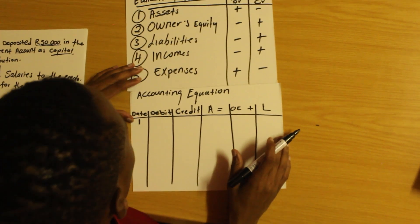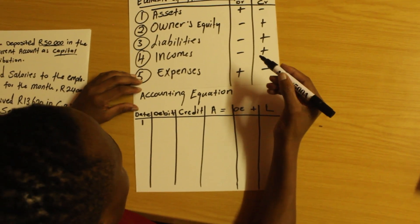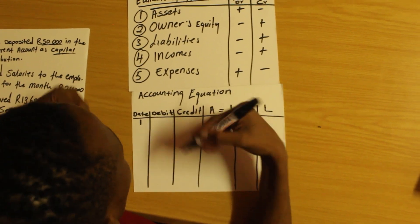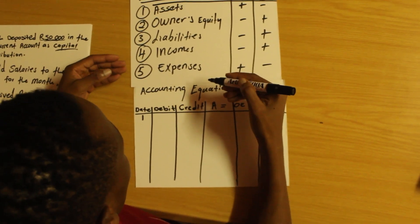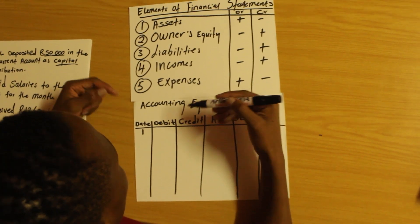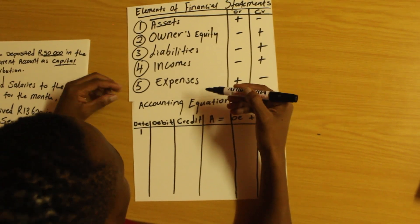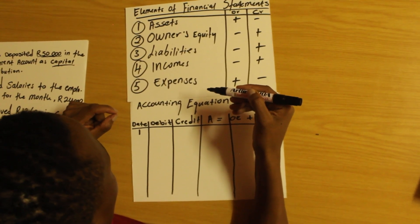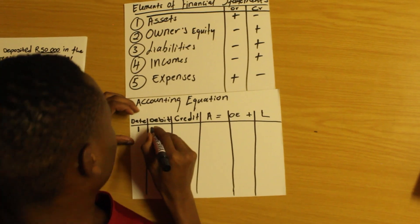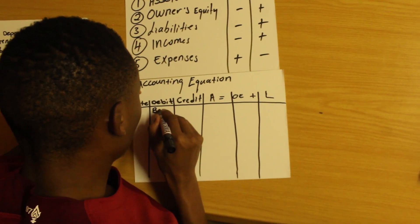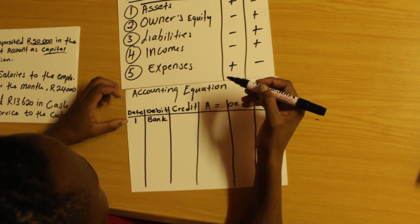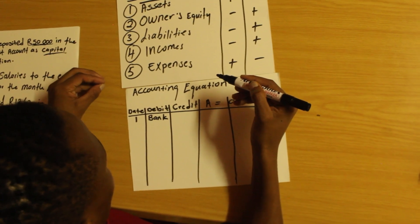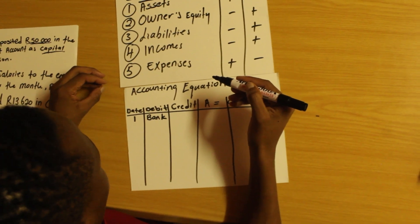Before we start recording, we've already identified two accounts that are affected: bank and capital. When you record, you follow the principles — the elements of financial statements and how they apply. I'm going to debit bank, and the reason I'm debiting bank is because bank is an asset, and assets increase on the debit side.